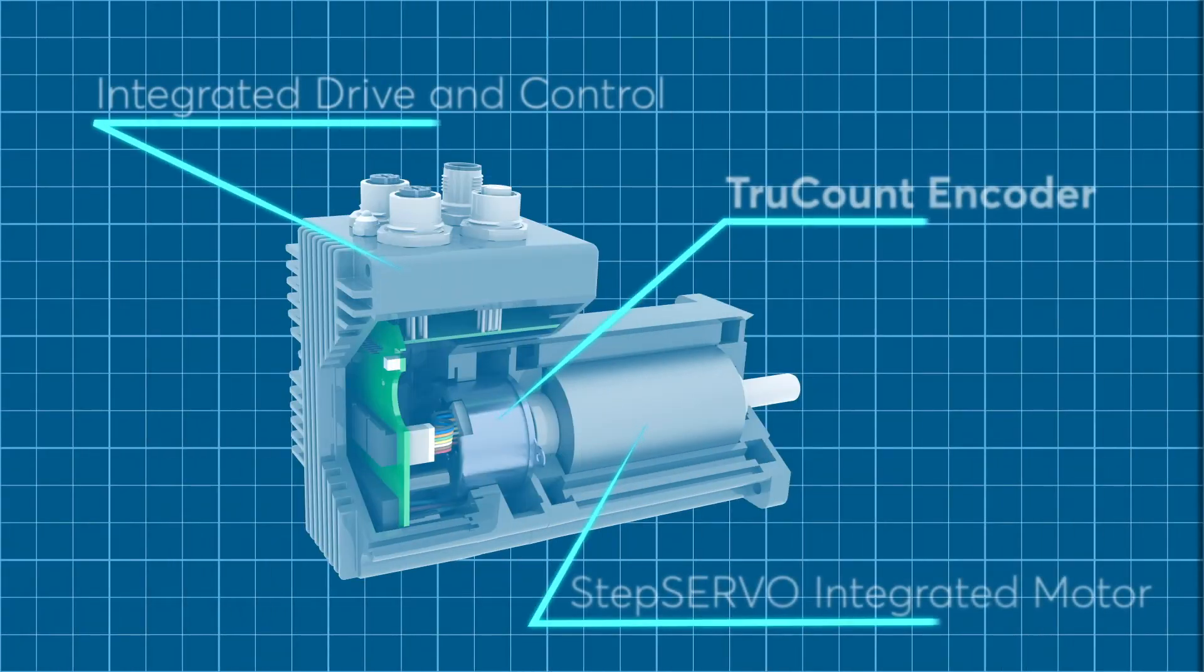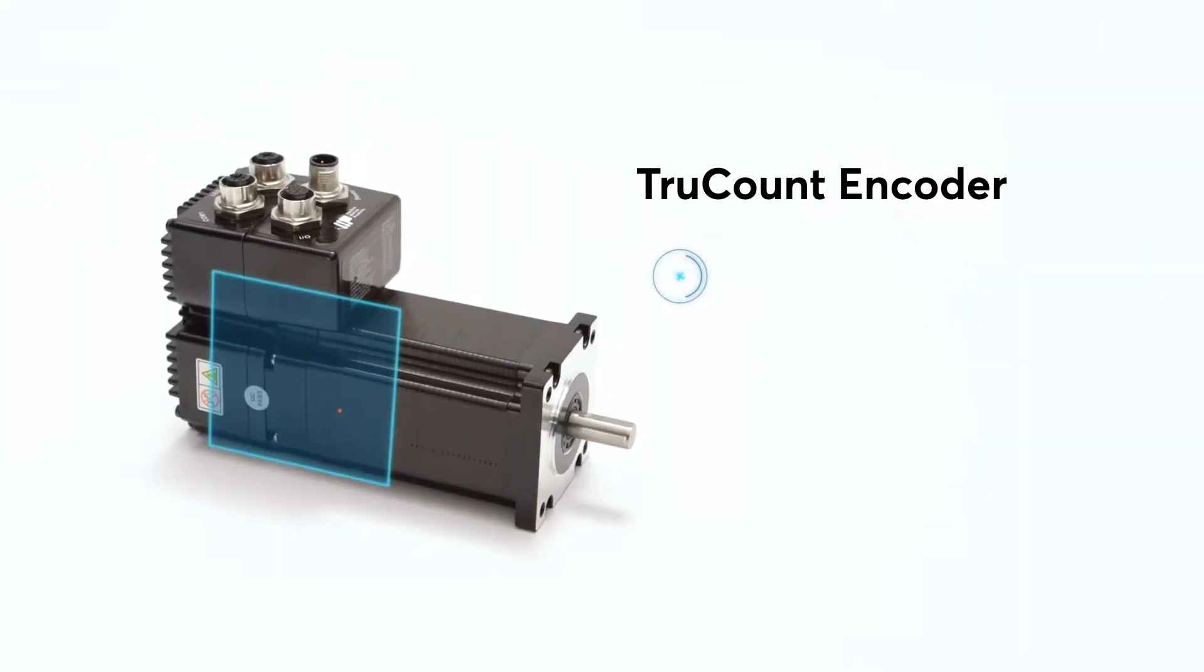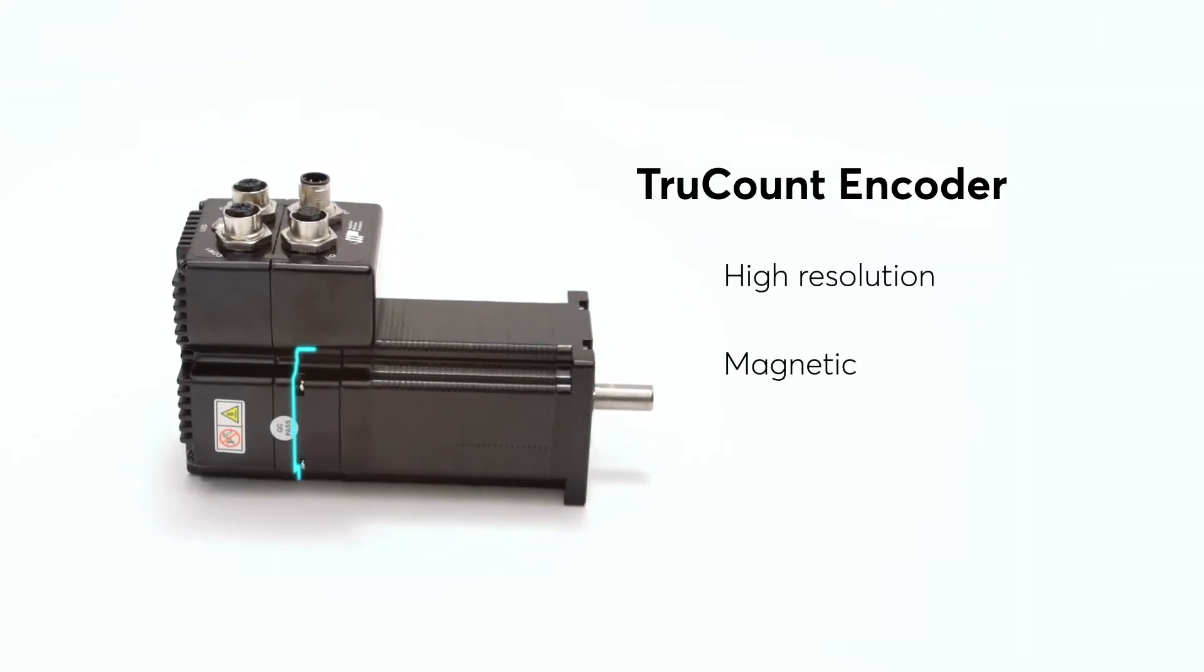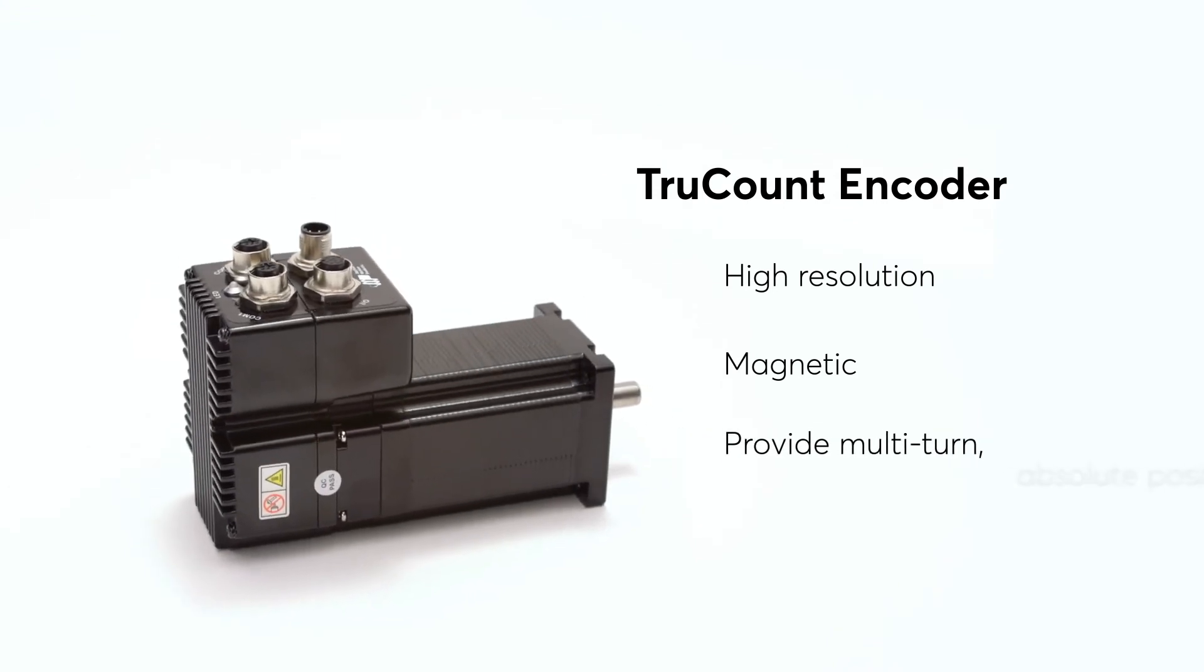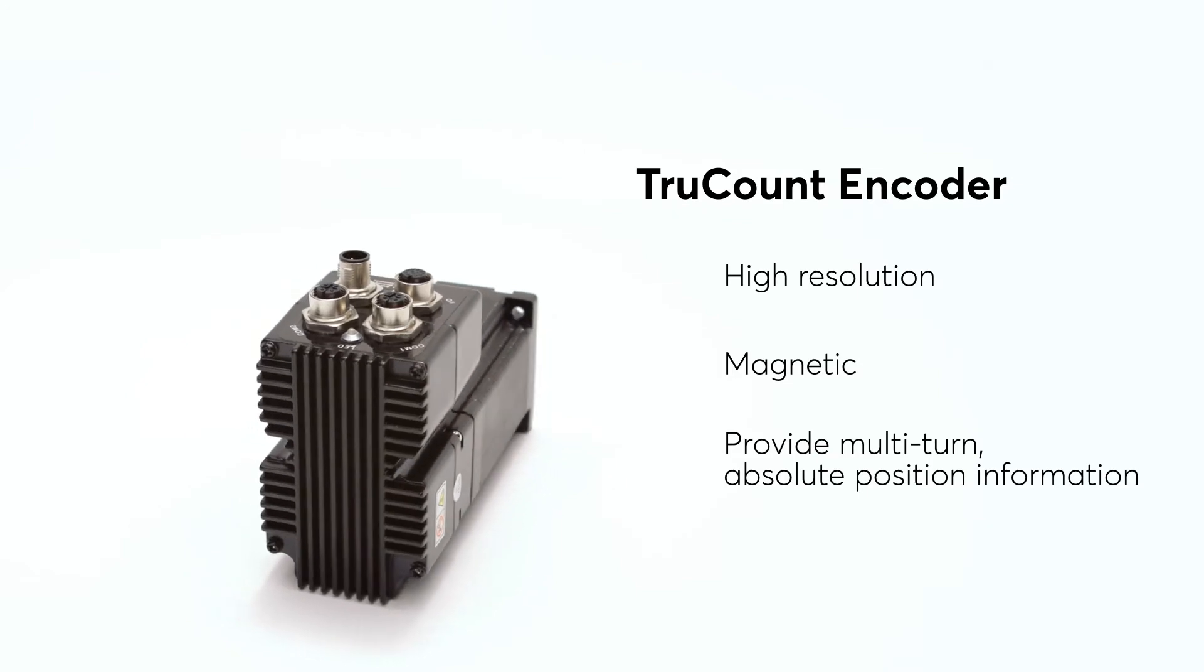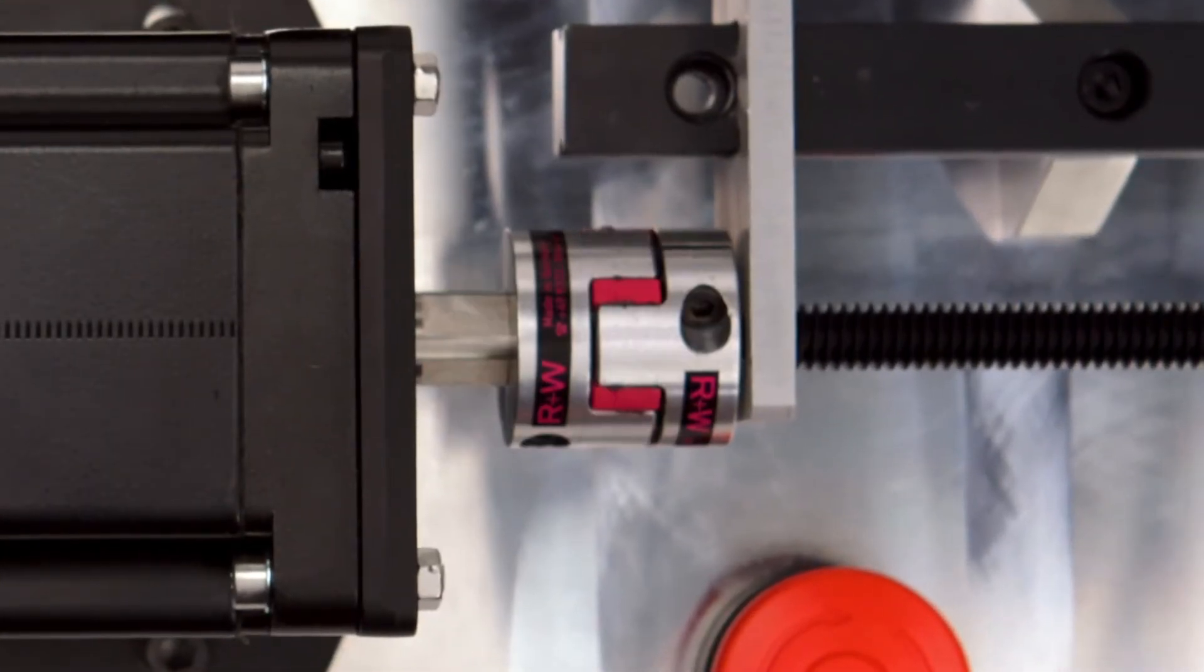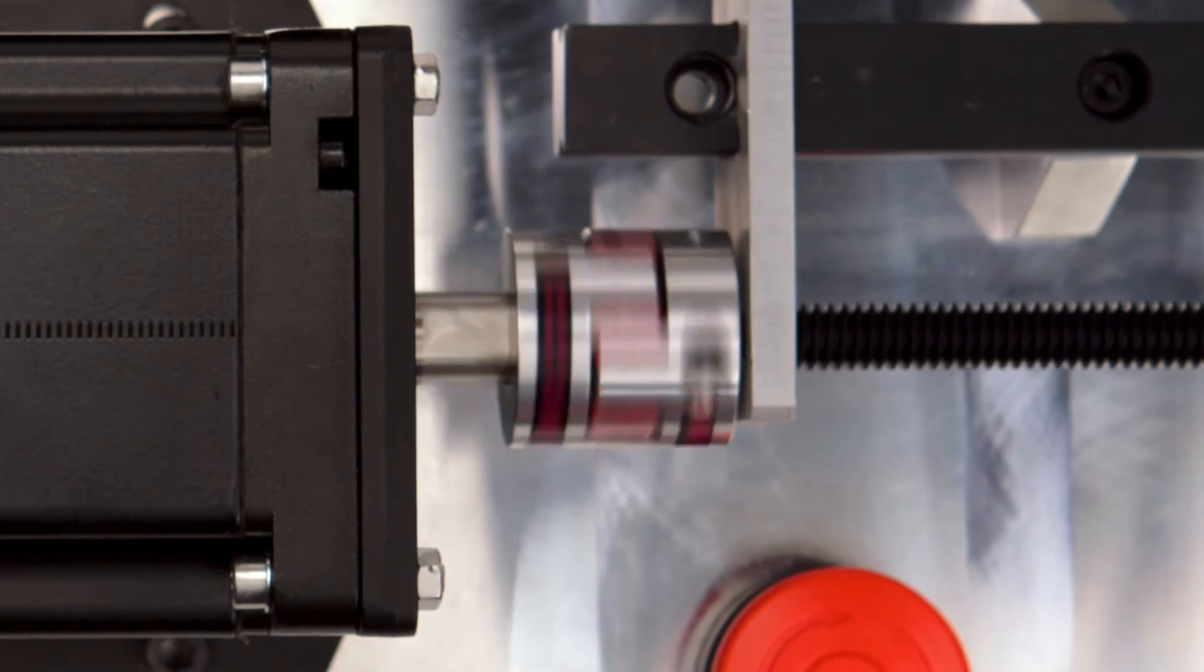The solution to time-wasting homing routines is TruCount Encoders. TruCount Encoders are high-resolution, magnetic encoders that provide multi-turn, absolute position information without battery backups or internal gears. TruCount Encoders provide unique information for every position of the motor shaft, even over tens of thousands of rotations.